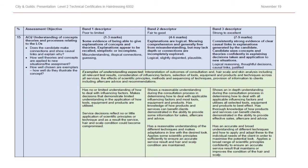AO2 is all about understanding — the understanding of concepts, theories, and processes. How well do they justify their actions and explain what and why they are doing? Their explanation should be in sufficient depth and detail to show comprehensive understanding in order to score the higher marks. Examples of where you might find AO2 evidence include how they interpret the test results, their planning methods, or consideration of the factors.